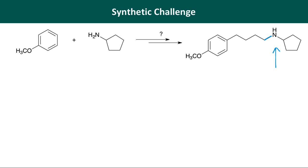Let's start with a retrosynthesis, thinking backwards from the end. It would be very difficult—especially for this problem—to guess our way to the product by starting at the beginning; that would take a lot of trial and error. Looking at the target molecule, it may look complex, but the key question is: how do we make that carbon-nitrogen single bond? The answer is reductive amination, whose last step is reducing the imine to the amine.